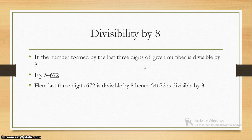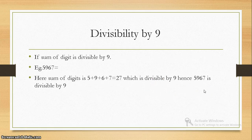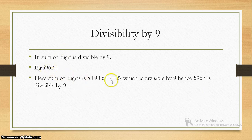Divisibility by 8: if the number formed by the last 3 digits of a given number is divisible by 8, then the whole number is divisible by 8. Here 672 is divisible by 8, hence the whole number is divisible by 8. Divisibility by 9: if the sum of the digits is divisible by 9, then the whole number is divisible by 9. Consider the example 5967 — the total is 5 + 9 + 6 + 7 = 27, which is divisible by 9, hence 5967 is divisible by 9.